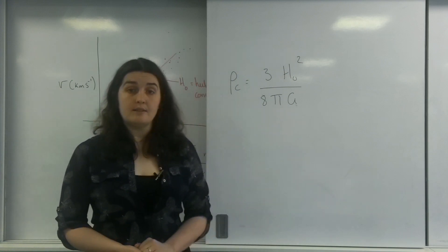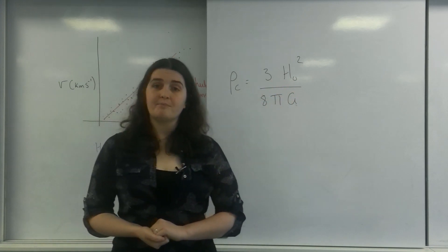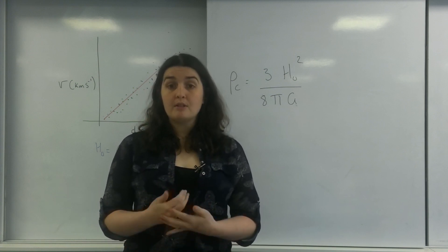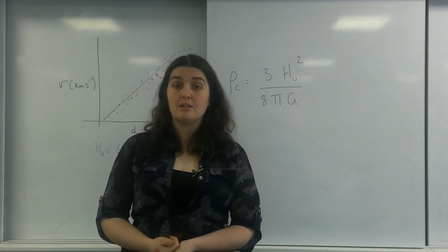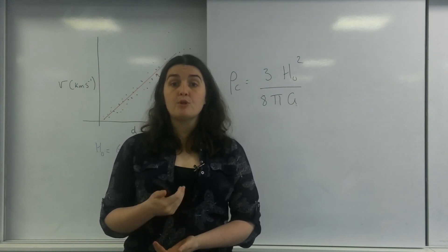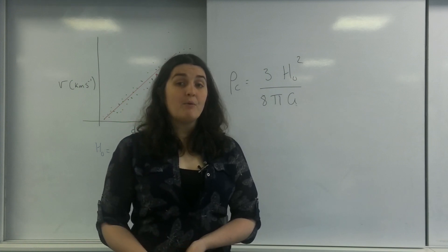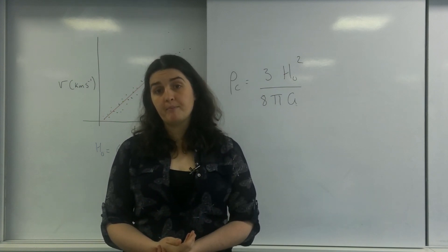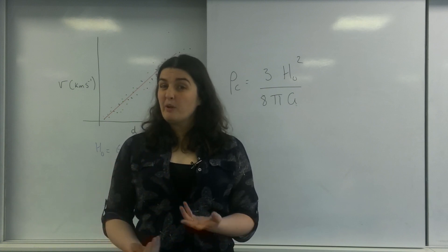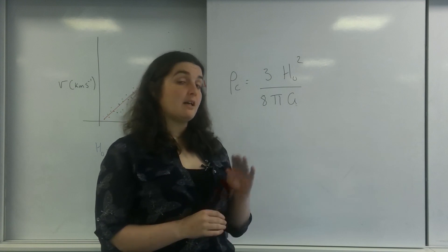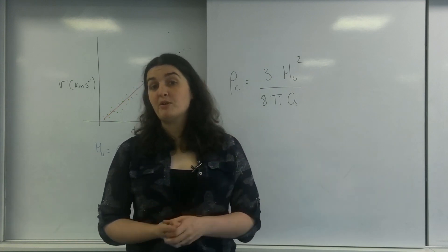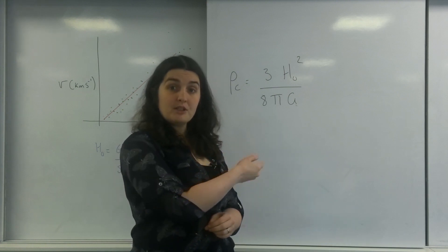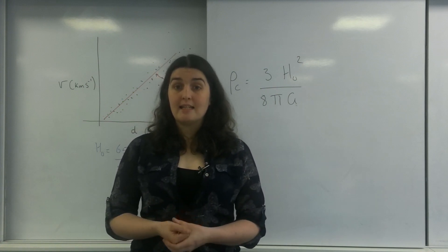The problem with calculating this critical density is that Hubble's constant keeps changing. A question they may ask is: how does Hubble's constant affect the critical density of the universe? What they want you to realise is that because it's Hubble's constant squared, a change in it will have quite a significant effect on the density. You don't need to know this equation, but it's important to understand that the changing value of Hubble's constant can have really detrimental effects on cosmology and understanding the fate of the universe.